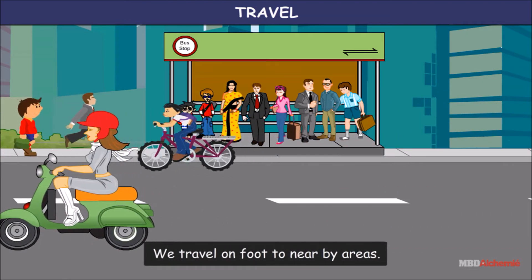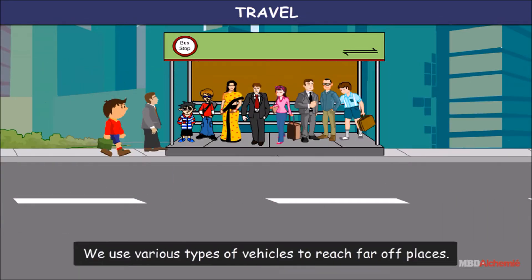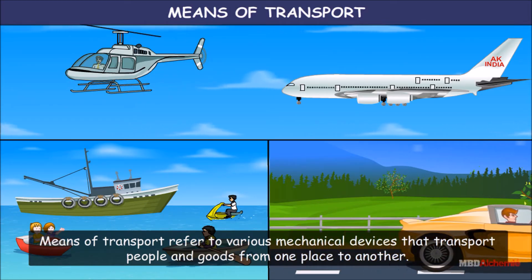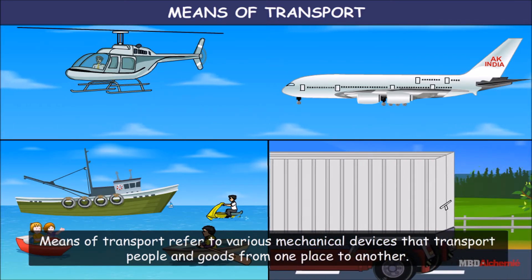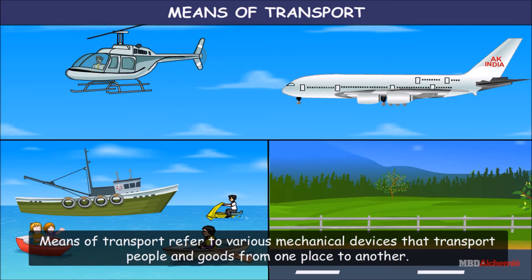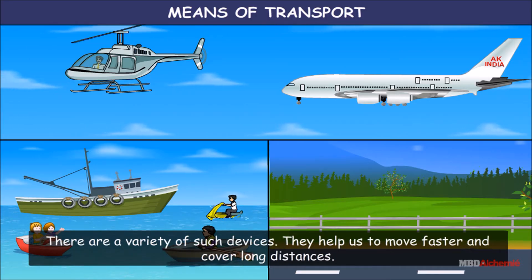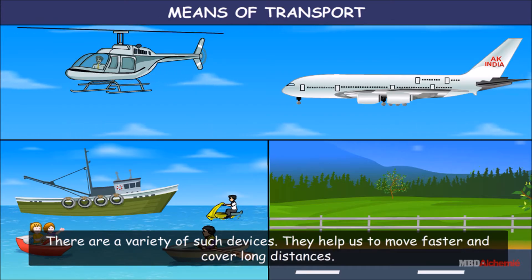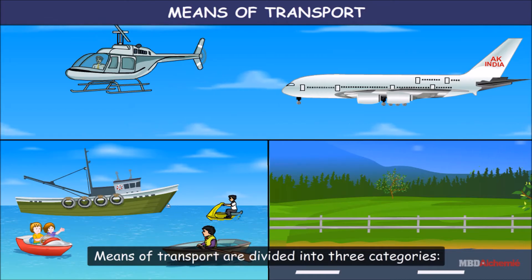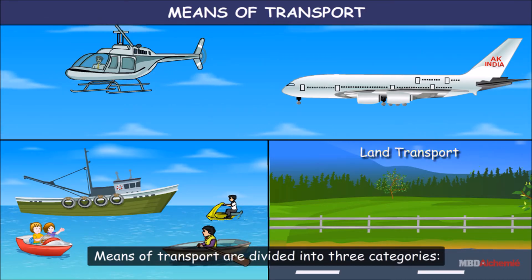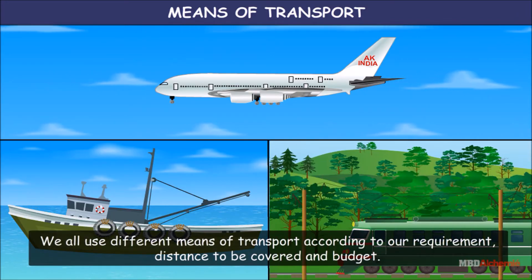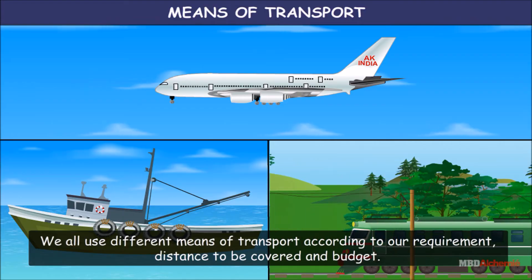We travel on foot to nearby areas and use various types of vehicles to reach far-off places. Means of transport refers to various mechanical devices that transport people and goods from one place to another. There are a variety of such devices that help us move faster and cover long distances. Means of transport are divided into three categories: land transport, water transport, and air transport.